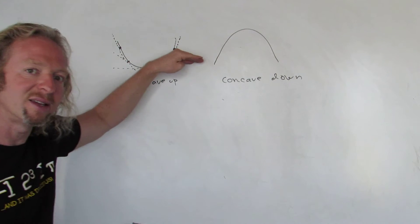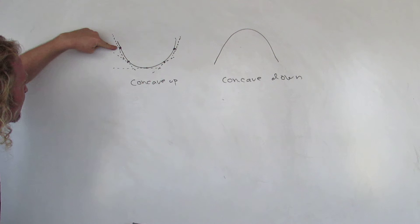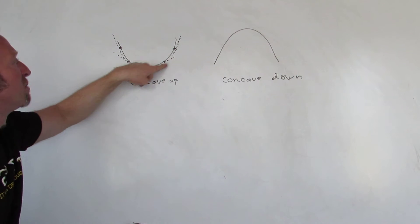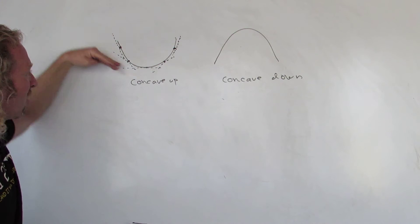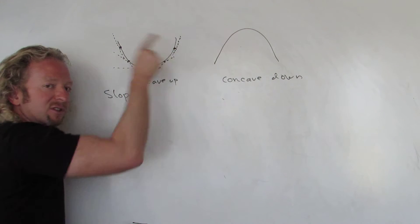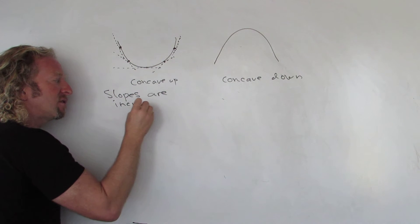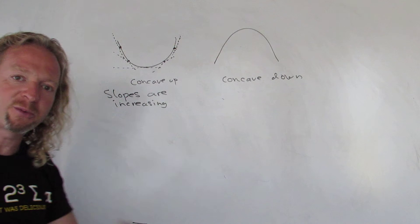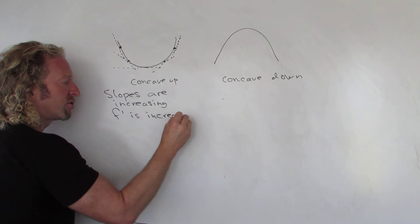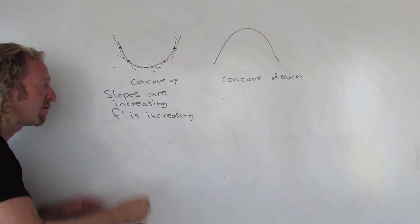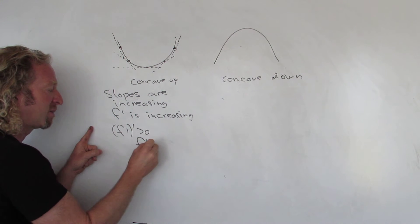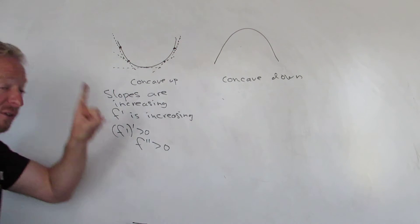From negative to zero to positive — maybe this is negative ten, then negative four, then zero, then two, then five. So the slopes are increasing. The slopes are the values of the first derivative, so the first derivative is increasing. If the first derivative is increasing, that means its derivative is positive. Remember, if a function is increasing, it has a positive derivative. So the derivative of the derivative — the second derivative — is positive. So if a function is concave up on an interval, the second derivative is positive.